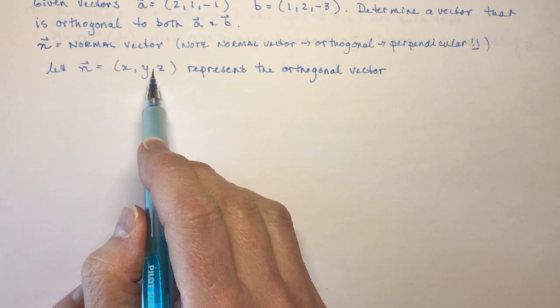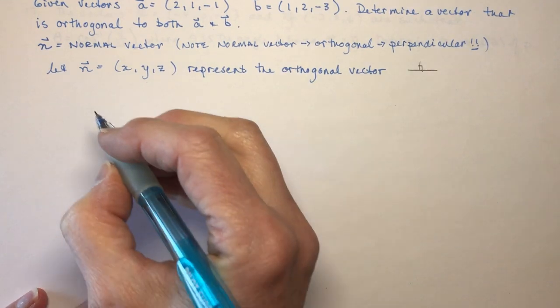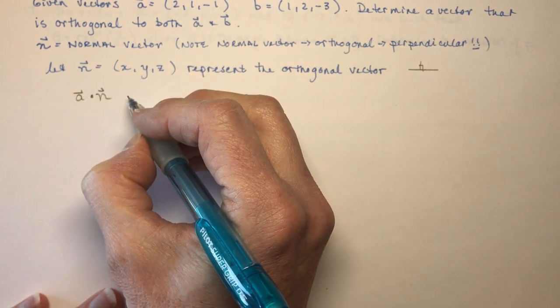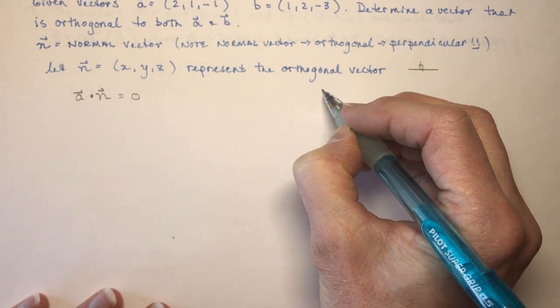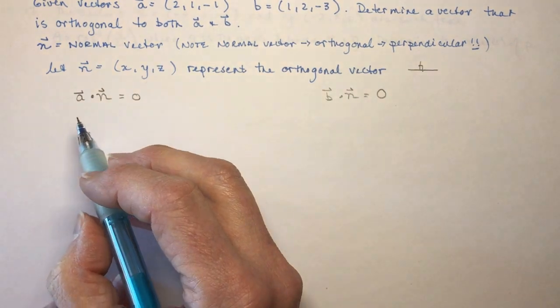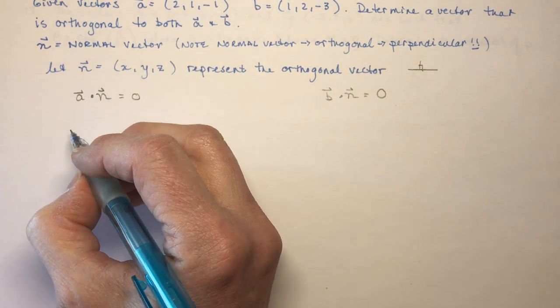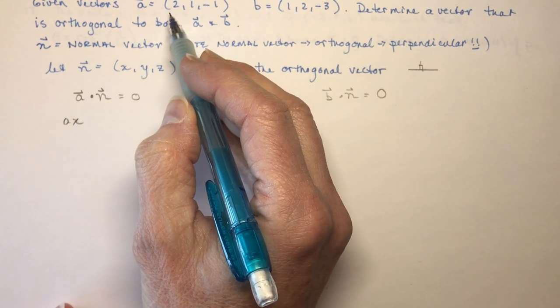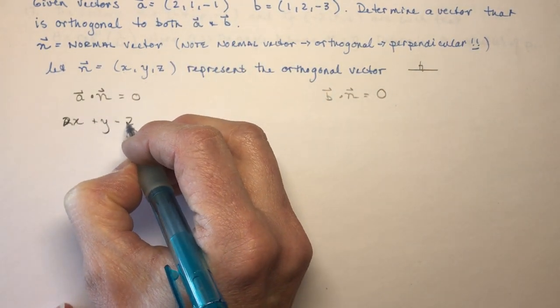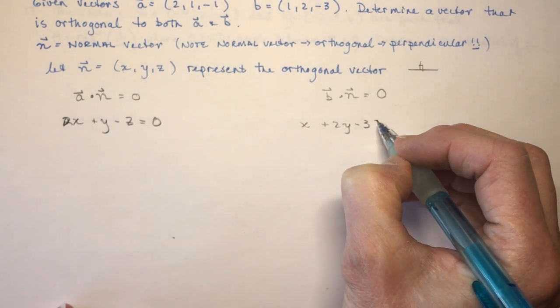Okay, so if vector N is XYZ, we'll let that represent the orthogonal vector, or the one that is perpendicular to the two vectors, then I know that the dot product of A and my normal has to be equal to 0. And I also know that vector B times this normal vector is 0. And that was one of the things we showed earlier, that if the dot product was 0, then the vectors were perpendicular to one another. So looking at A dot N, I would have 2X plus Y minus Z is going to be equal to 0. And this one I'm going to have X plus 2Y minus 3Z is equal to 0.